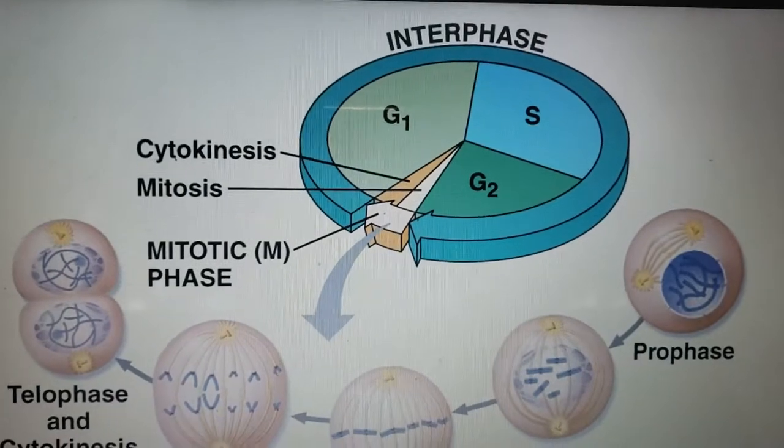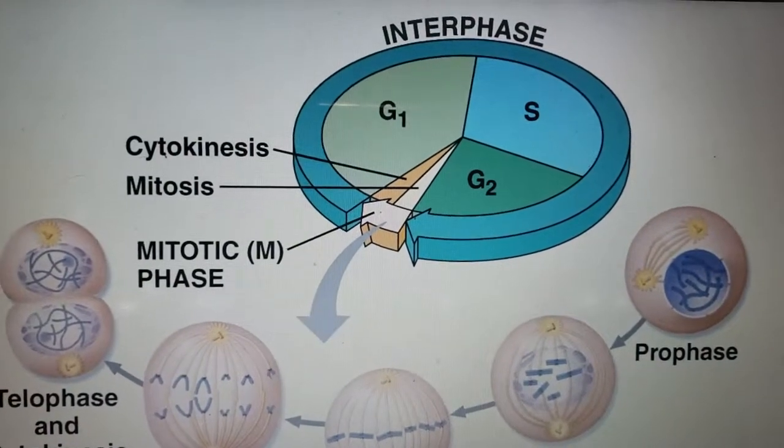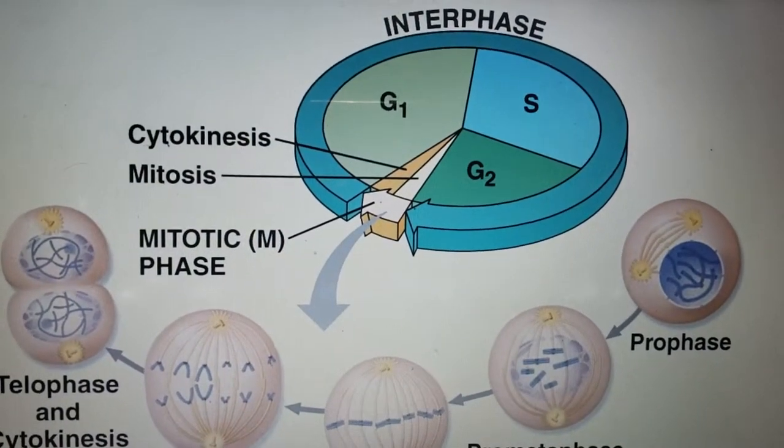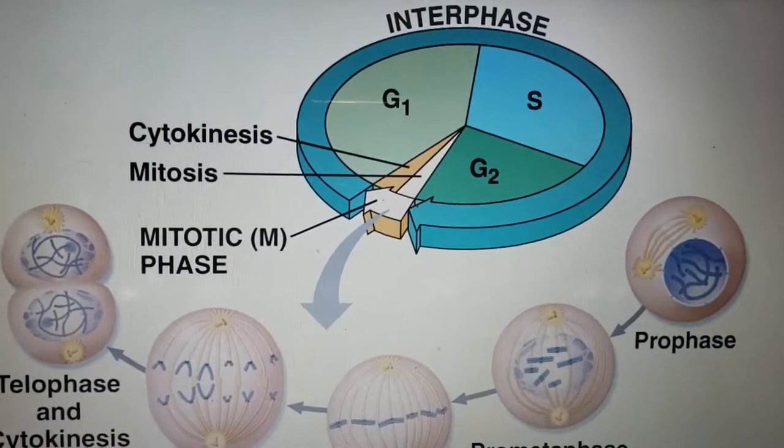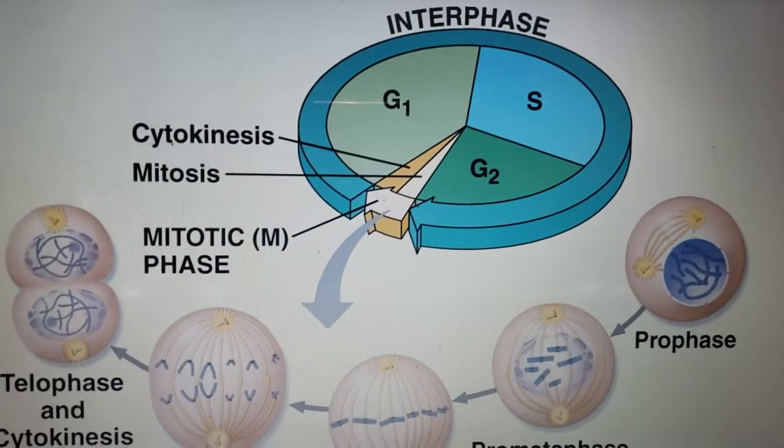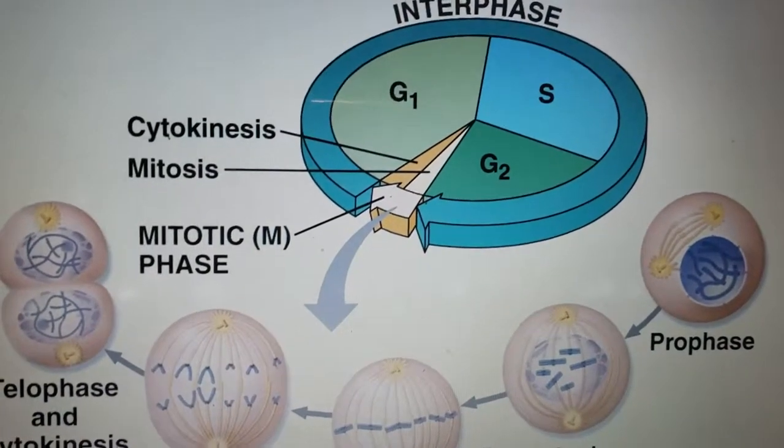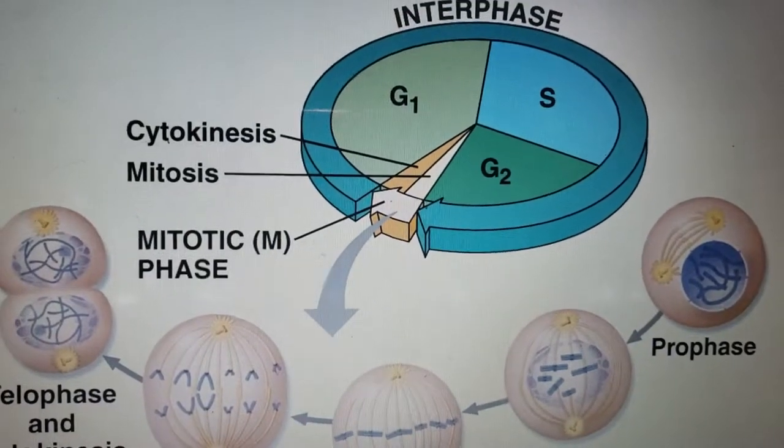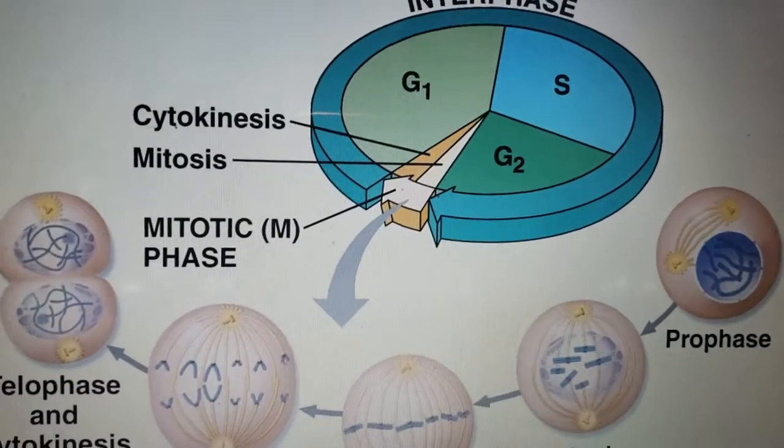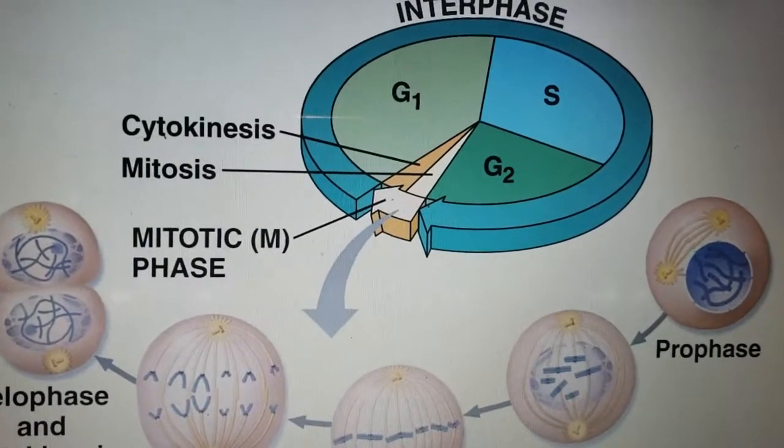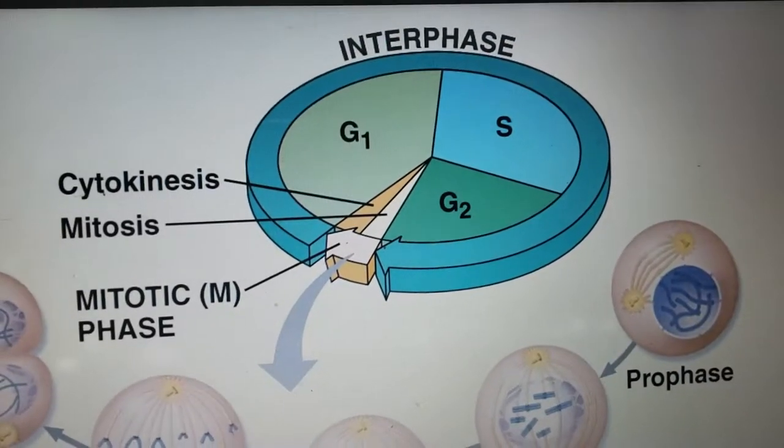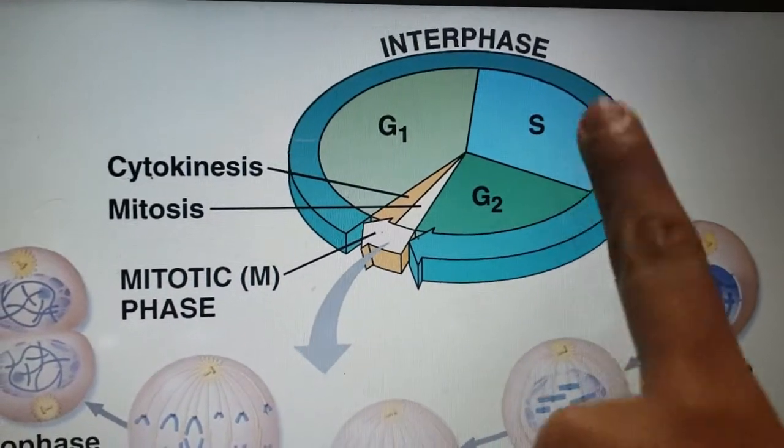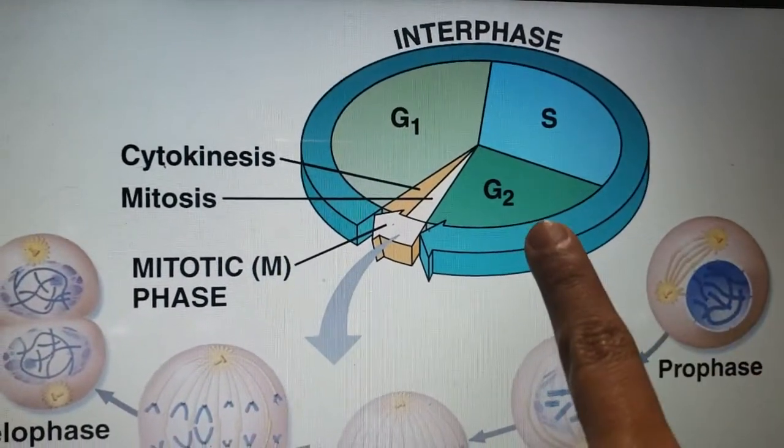After passing the checkpoint, it moves to the S phase where the DNA is replicated to form the new sister chromatids and identical chromosomes. Once DNA replication is complete, it moves to the G2 phase.